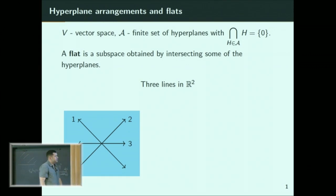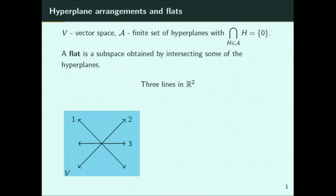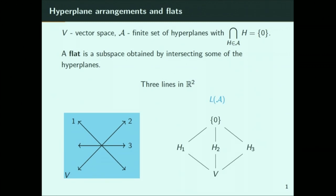Let's do an example. Here are three lines inside R2 — three hyperplanes inside a vector space. Here is a nice diagram that keeps all the information of my flats. If I intersect none of the flats, I end up with the vector space V at the bottom. If I take any one of the flats, I have the hyperplanes I start with. As soon as I intersect any two of the hyperplanes, I get the origin. And if I intersect three of the hyperplanes, I still get the origin, so there are no new subspaces.